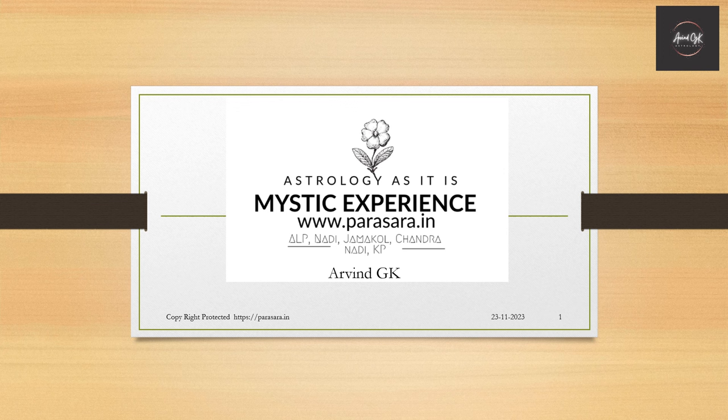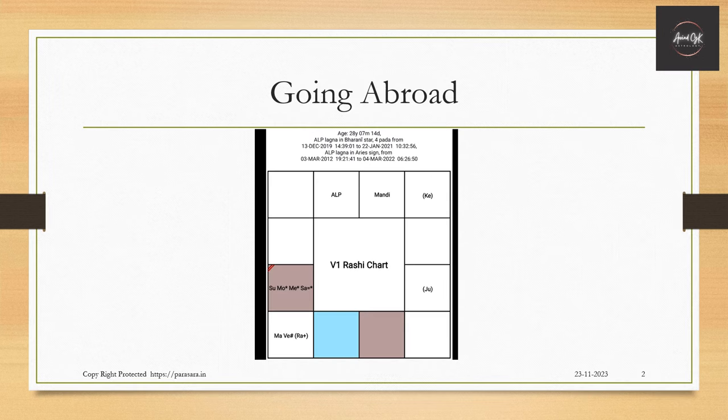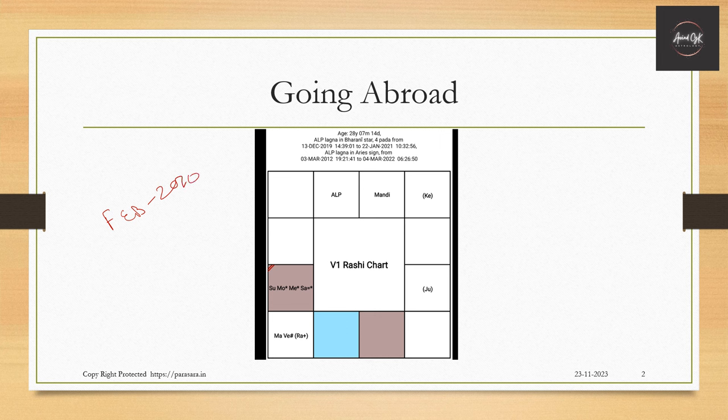Hi, Arvind again here. This time with the chart using ALP, we will decode how a person can go abroad. Let's quickly see how it works. You have this chart where this gentleman, somewhere in February 2020, has been...